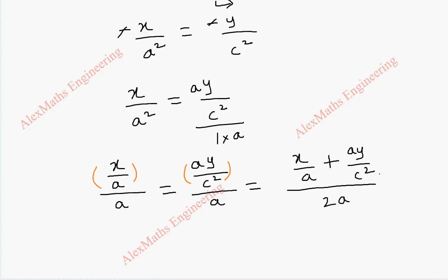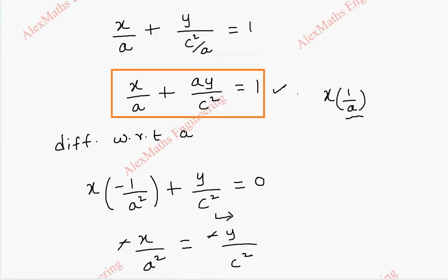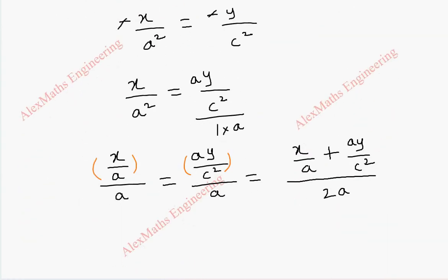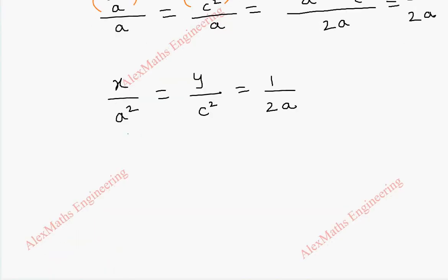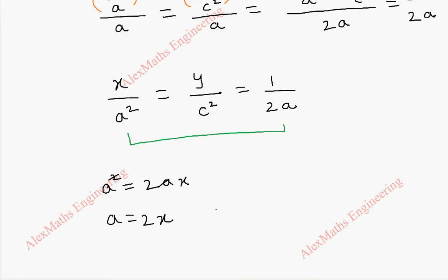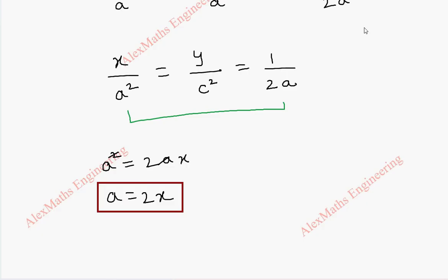By the ratio property, we can add numerators and denominators: (x/a + ay/c²) / (a + a) = 1/2a. Since x/a + ay/c² = 1, this gives x/a² = y/c² = 1/2a. Taking x/a² = 1/2a and cross-multiplying: a² = 2ax, so a = 2x. We have found the value of parameter a.